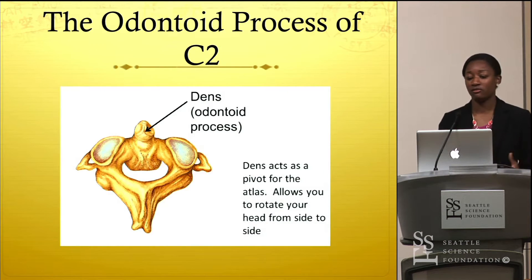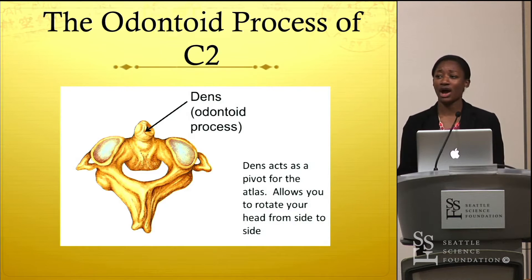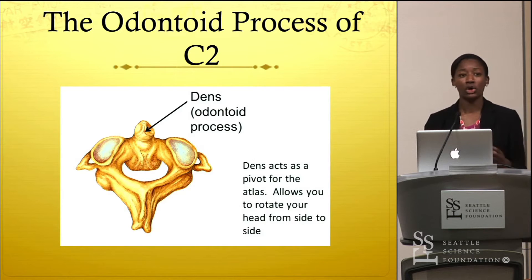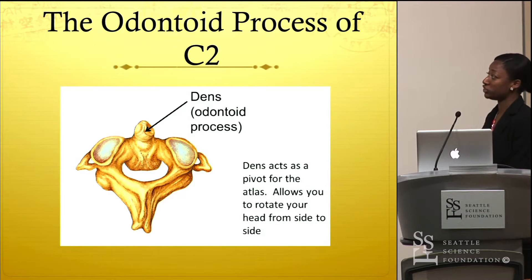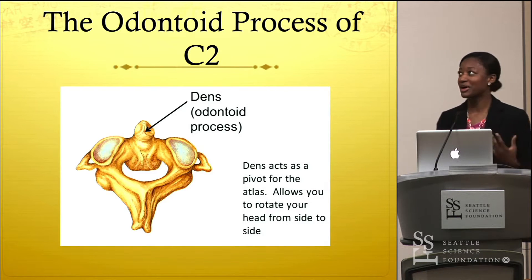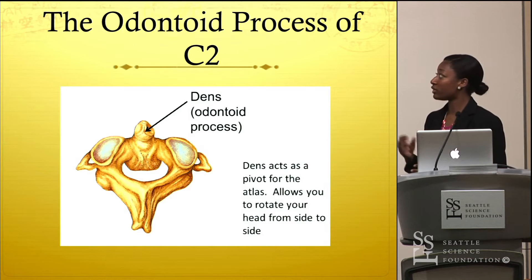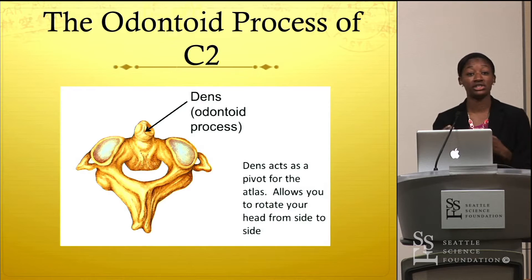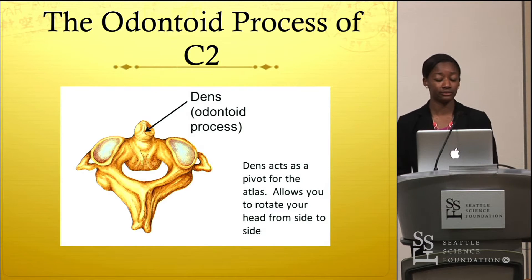To give a little bit of background: the odontoid process is a feature of the axis, or C2. Johal et al described its morphology as a superior projection from the vertebral body of C2. Moreover, Tubbs et al reported that developmentally the odontoid process originated from C1 and fused inferiorly with the vertebral body of C2.